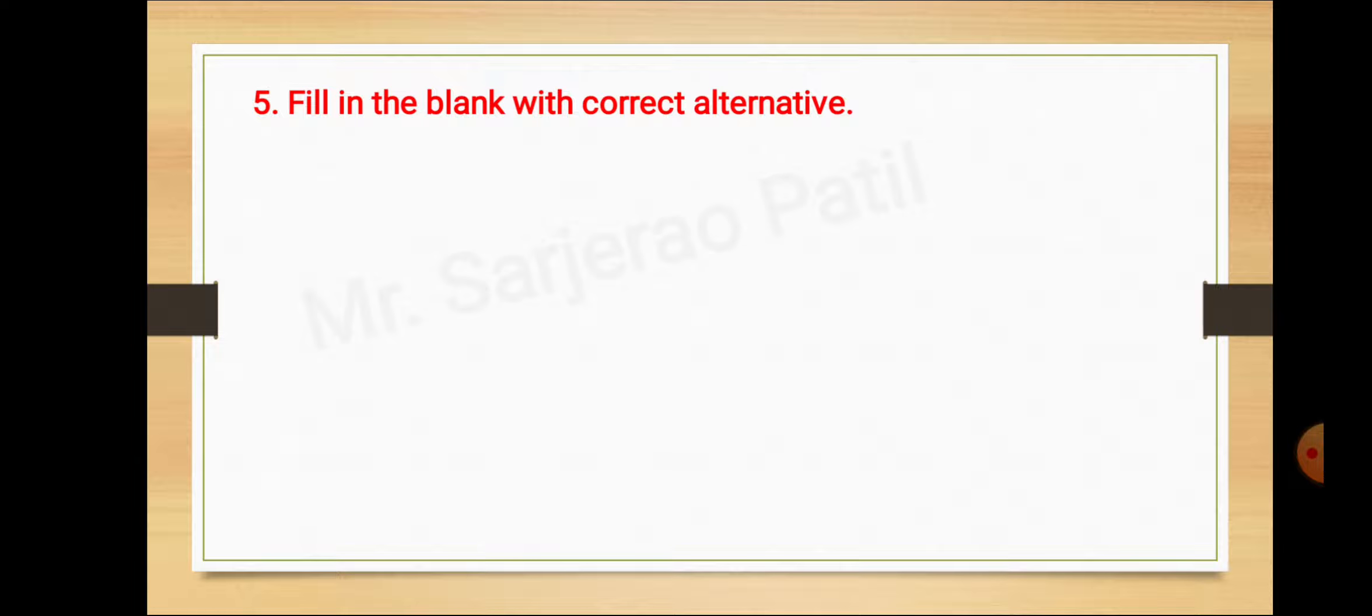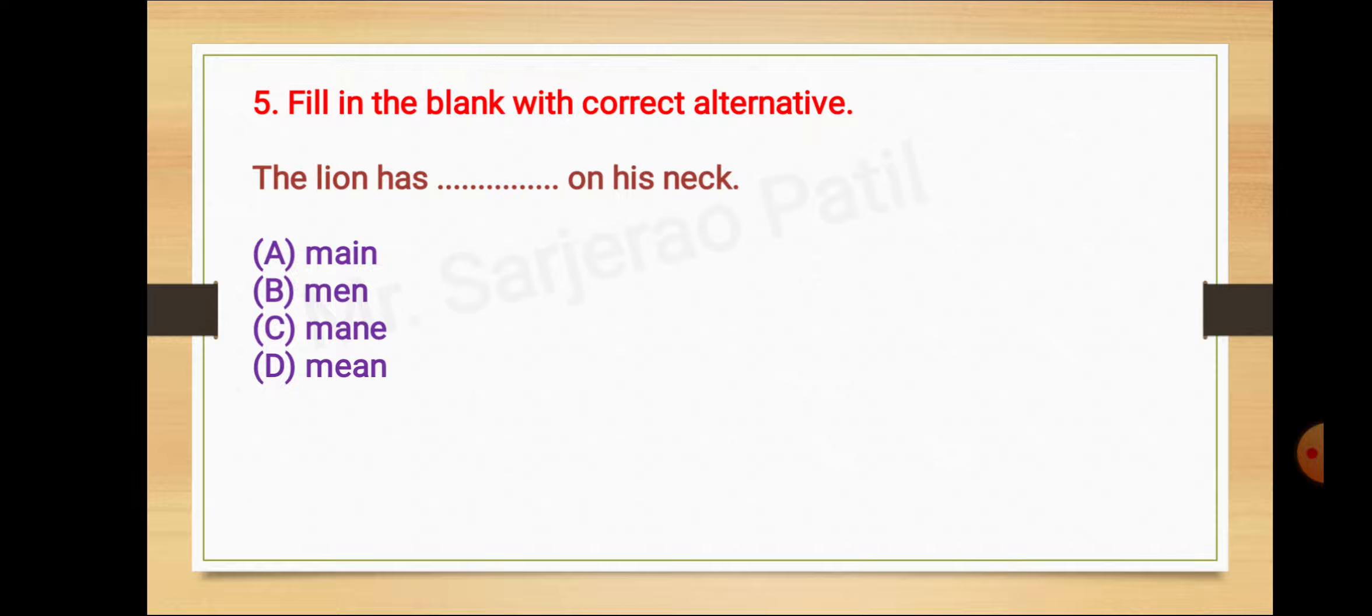Question number 5: Fill in the blanks with correct alternative. The lion has dash on his neck. Alternative A main M-A-I-N, alternative B M-E-N men, alternative C M-A-N-E mane, alternative D M-E-A-N mean.